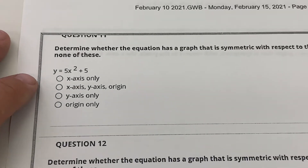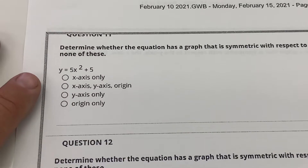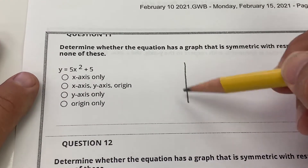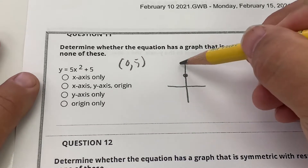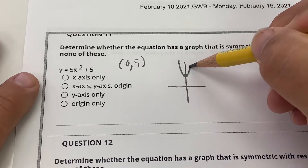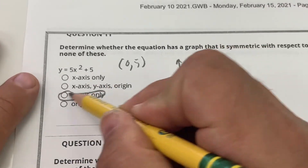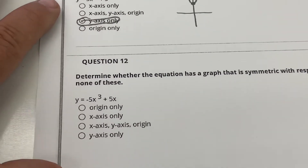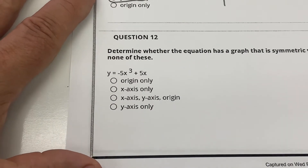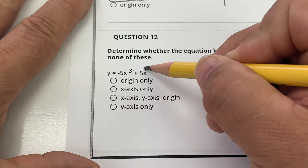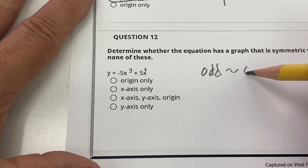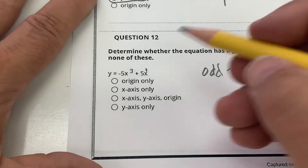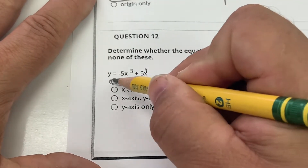Number 11 asks what the function 5x² + 5 is symmetric about. If I were to graph it, it would have a vertex at (0, 5) and be symmetric about the y-axis — y-axis only. Notice the other function has x to the third and x to the first, meaning it's odd. An odd function is symmetric with respect to the origin — origin only.